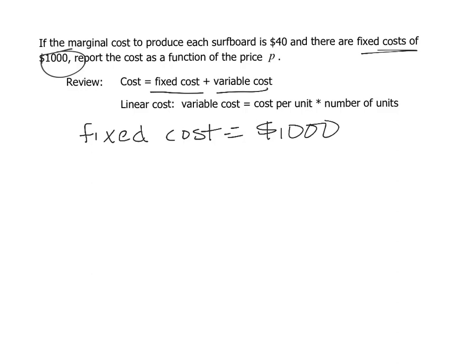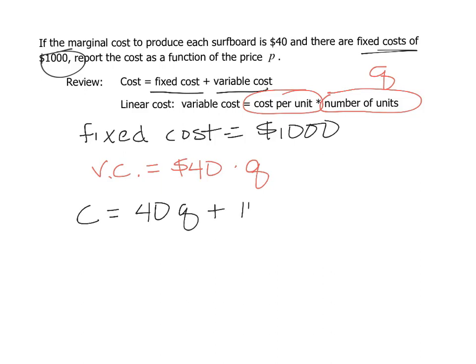They told us that our marginal cost is our cost for each surfboard, and so that marginal cost is our cost per unit. Our variable cost is our marginal cost which is $40 per board times the number of units, the quantity Q. Our cost function looks like 40Q plus 1000.